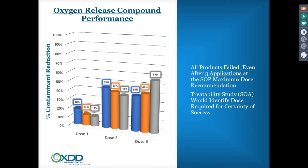The maximum achieved was about 18%. We had budget for three doses — even after three doses we were only at about 50% with a 90% target for one dose. This shows that you need to understand the non-target oxygen demand that is missing from your characterization study. You can do that by measuring additional parameters in the characterization phase, or by doing a site-specific treatability study.